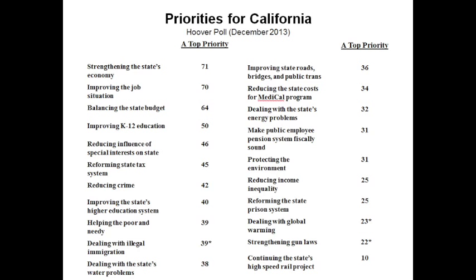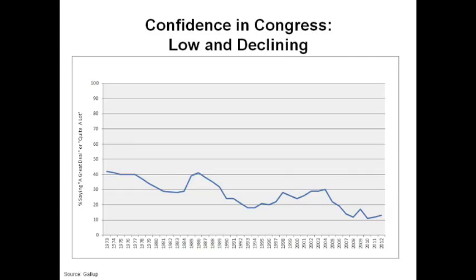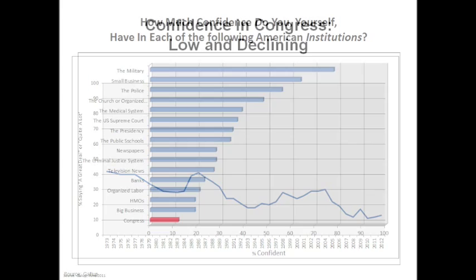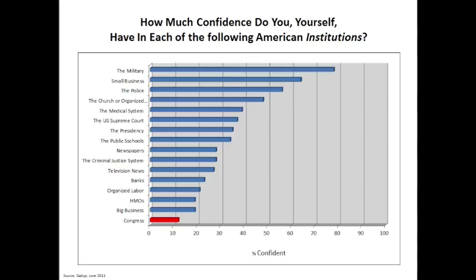Not surprisingly, confidence in Congress — which is never high — has been steadily declining since they first asked the question, approaching 10% at historical lows. George Will asked, who are these 10% who still have a great deal of confidence in Congress? And it's not just that people are in a bad mood about everything. Gallup asks this question every year about confidence in institutions, and Congress is dead last — behind HMOs, behind banks, behind everything. This is supposed to be the institution most closely associated with people — they run every two years, they have the smallest districts — and yet people are in a very foul mood about their Congress.